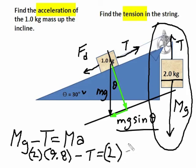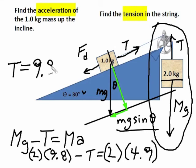Now, when you put this into your calculator and you solve for T, here's what you get. T equals 9.8 Newtons.